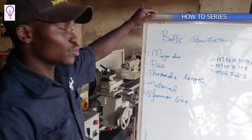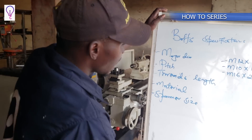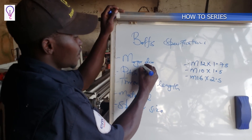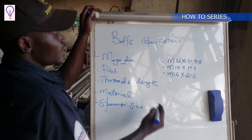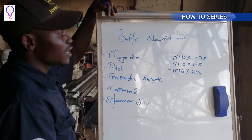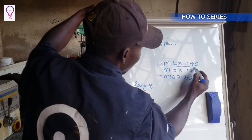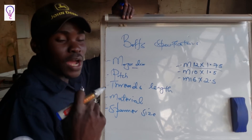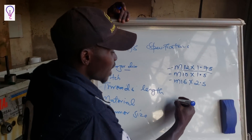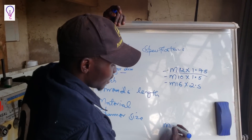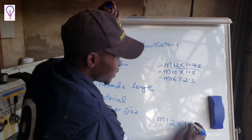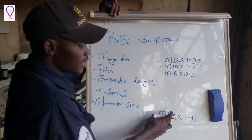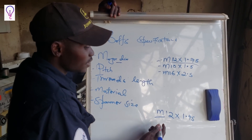Elaborating on the specification of a screw: we consider the major diameter. If you've ever come across specifications where they sell these screws in assortment bins, you'll find something like M12 by 1.75. The M stands for the major diameter, as we saw earlier.